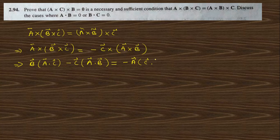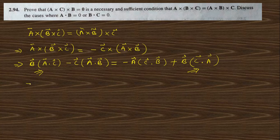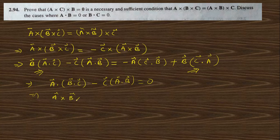Expanding BAC-CAB fully: the b-term means (b dot c)·a minus (c dot a)·b. You can see the matching terms cancel on the left-hand side, and the expression reduces to a cross (b cross c) equaling a·(b dot c) minus b·(c dot a), which can also be written as a cross (b cross c).